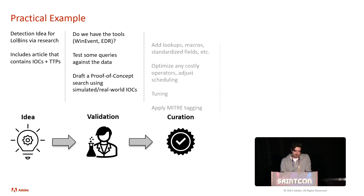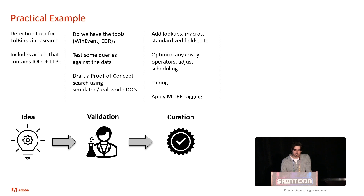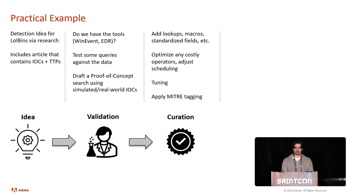Then we're going to curate that detection. At this point we're going to add lookups, macros, standardized fields, et cetera — these are very dependent on your environment and your standards within your team. We're going to optimize any costly operators, and adjust the scheduling — basically set up the search to be running on a schedule within our environment. And then we're going to tune. We don't want to explode the queue. If you do have a SOC, we want to ensure they have higher fidelity searches and they're not just triaging a constant flow of noise. And then we want to apply MITRE ATT&CK tagging — to see where within that framework or attack chain that search falls, to see what coverage you have over time.